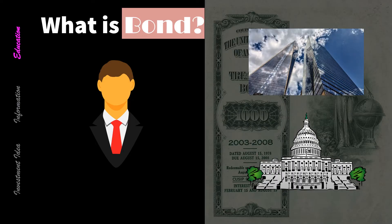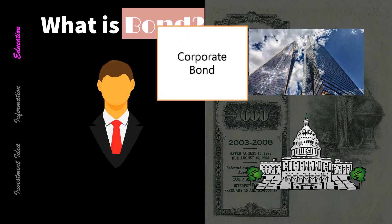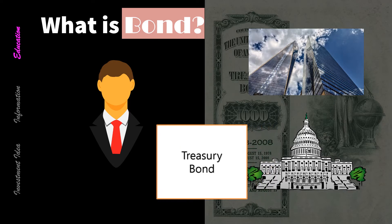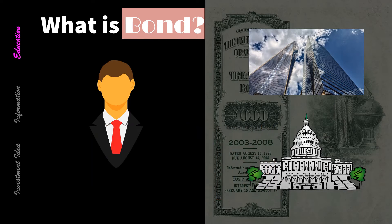A bond is simply a loan given to a company or government by an investor. By issuing a bond, a company or government borrows money from investors who in return are paid interest on the money they've loaned. Companies and governments issue bonds frequently to fund new projects or ongoing expenses. Some investors use bonds in hopes of preserving the money they have while also generating additional income. Bonds are often viewed as a less risky alternative to stocks and are sometimes used to diversify a portfolio.